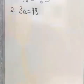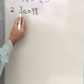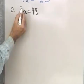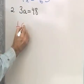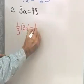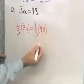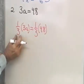Here's another example. I have 3a is equal to 48. I don't want 3a, I want 1a. So what I'm going to do is multiply both sides by the reciprocal of 3. That gives me 1/3 times 3a on the left side, and 1/3 times 48 on the right side — multiplying both sides by 1/3.